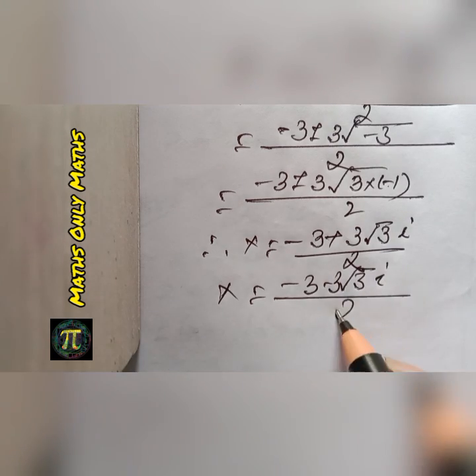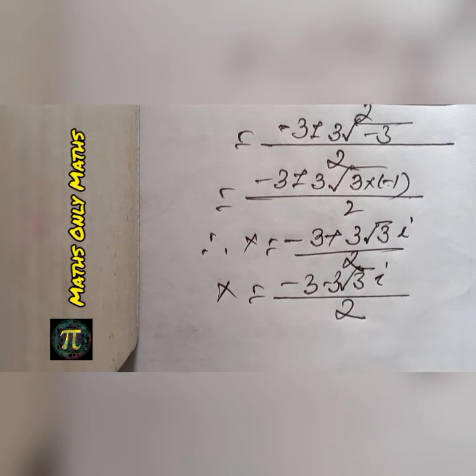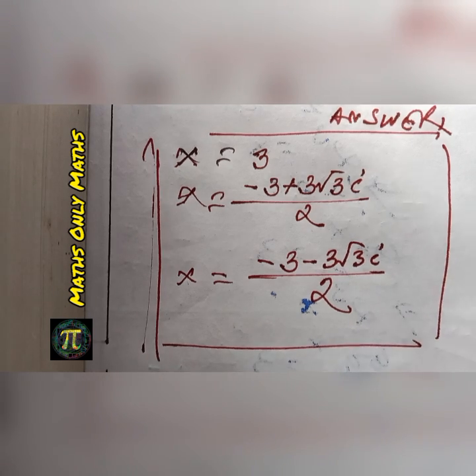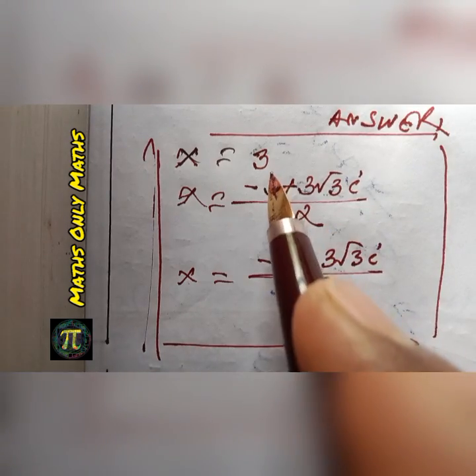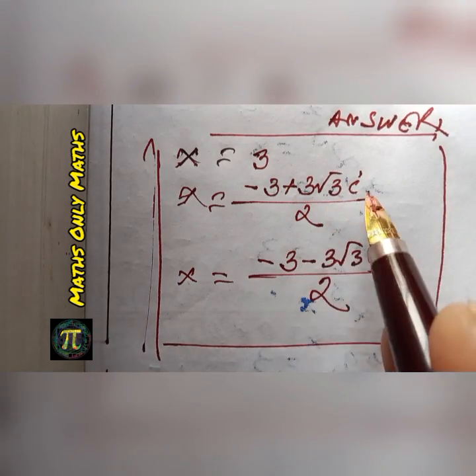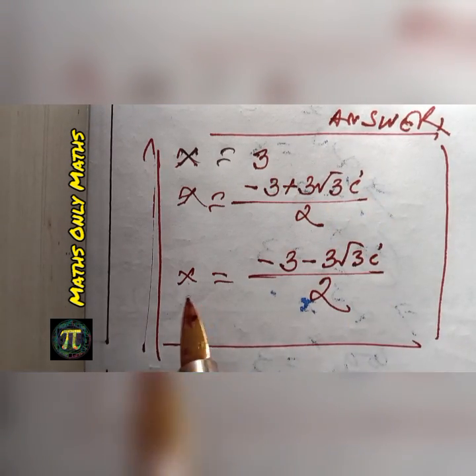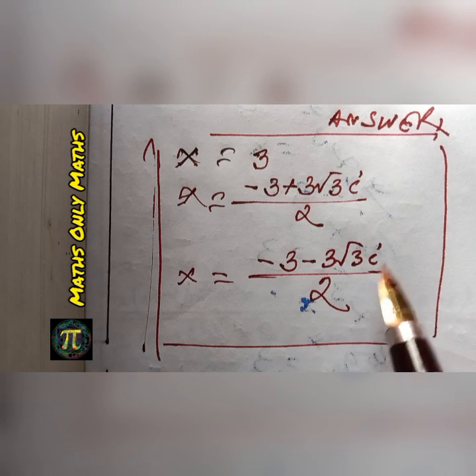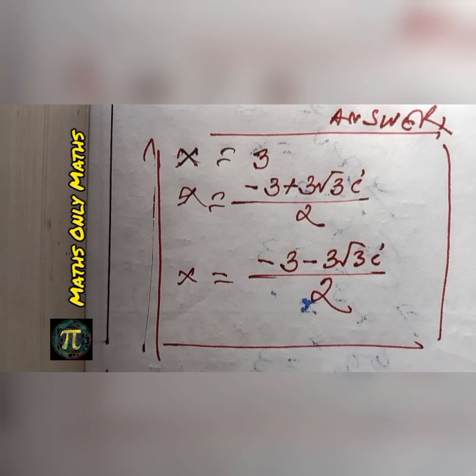So the final three answers are: x = 3, x = (-3 + 3√3 i) / 2, and x = (-3 - 3√3 i) / 2.